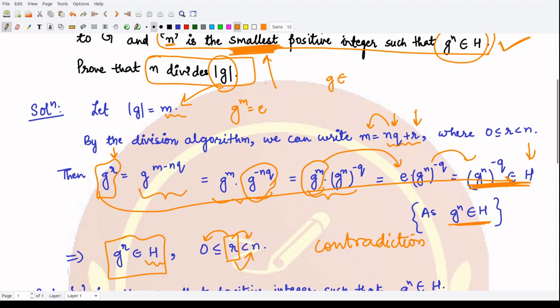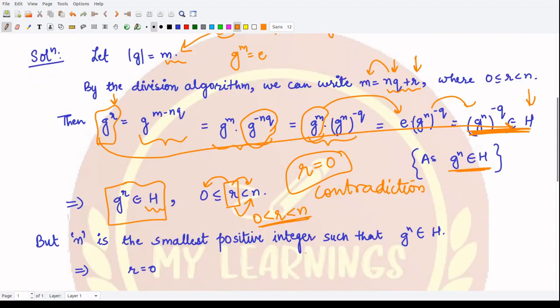Hence this thing cannot be there. If this thing cannot be there, that means r has to be equal to 0. This is the condition because if r is less than n and greater than 0, this condition is violated. Hence we obtain r to be equal to 0.